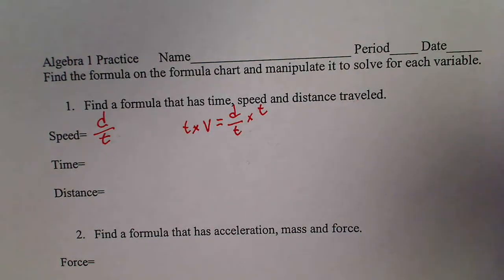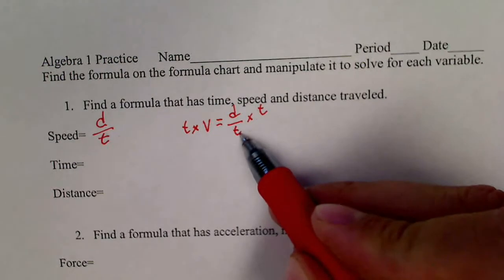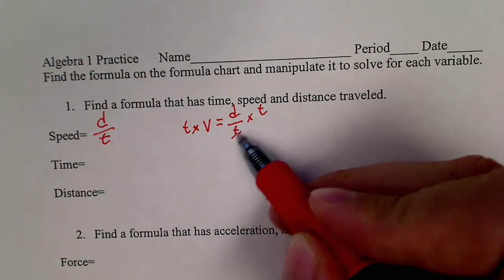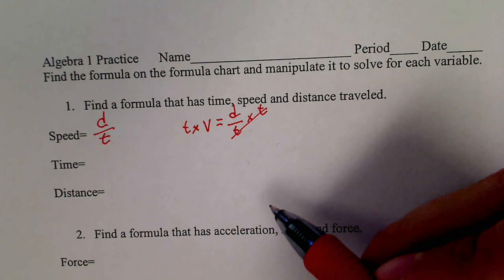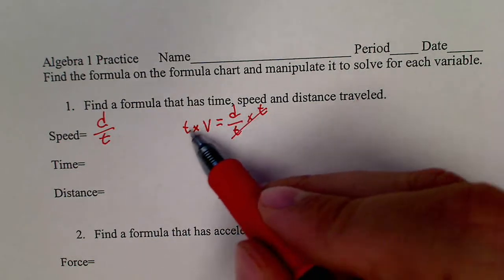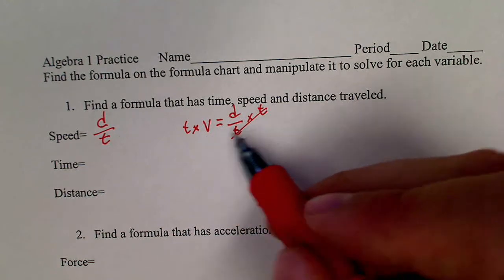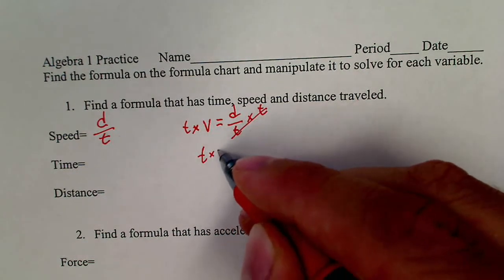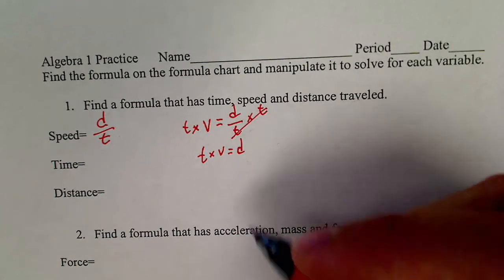The reason we're going to do that is because now we have a T on top and a T on bottom. Anytime we have T divided by T, these guys will cancel. Now, anytime you do any kind of multiplication or division to both sides and cancel something, you don't want to keep working in that same spot. You want to go ahead and rewrite.